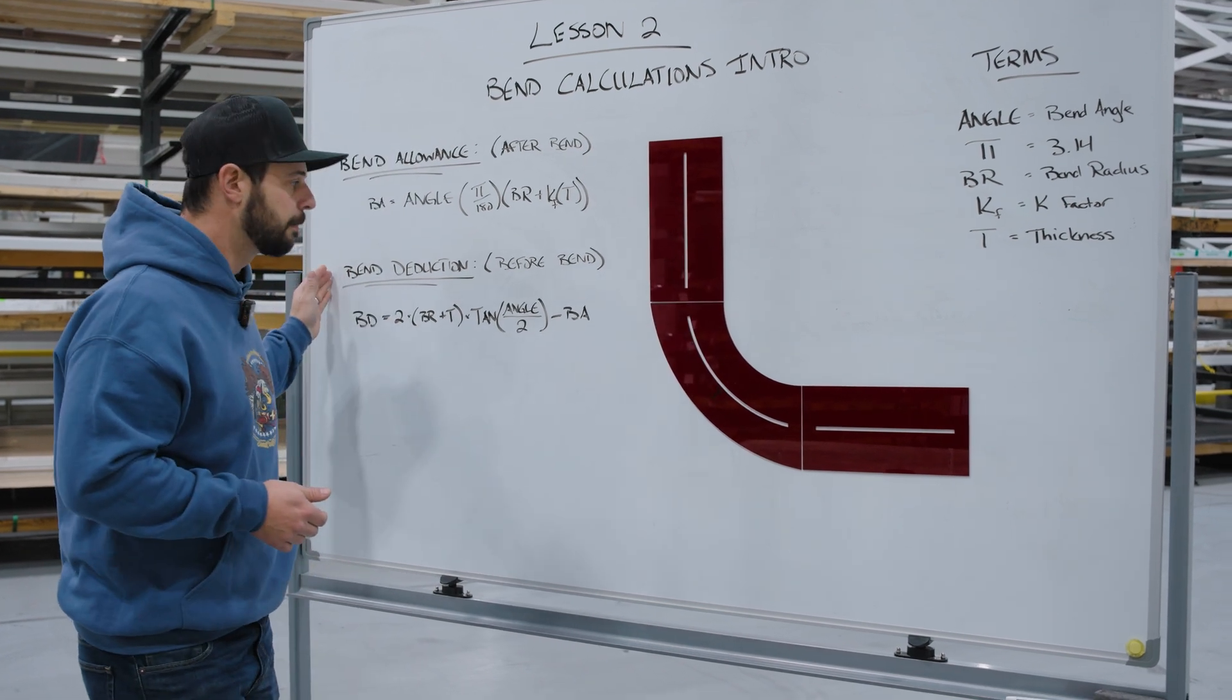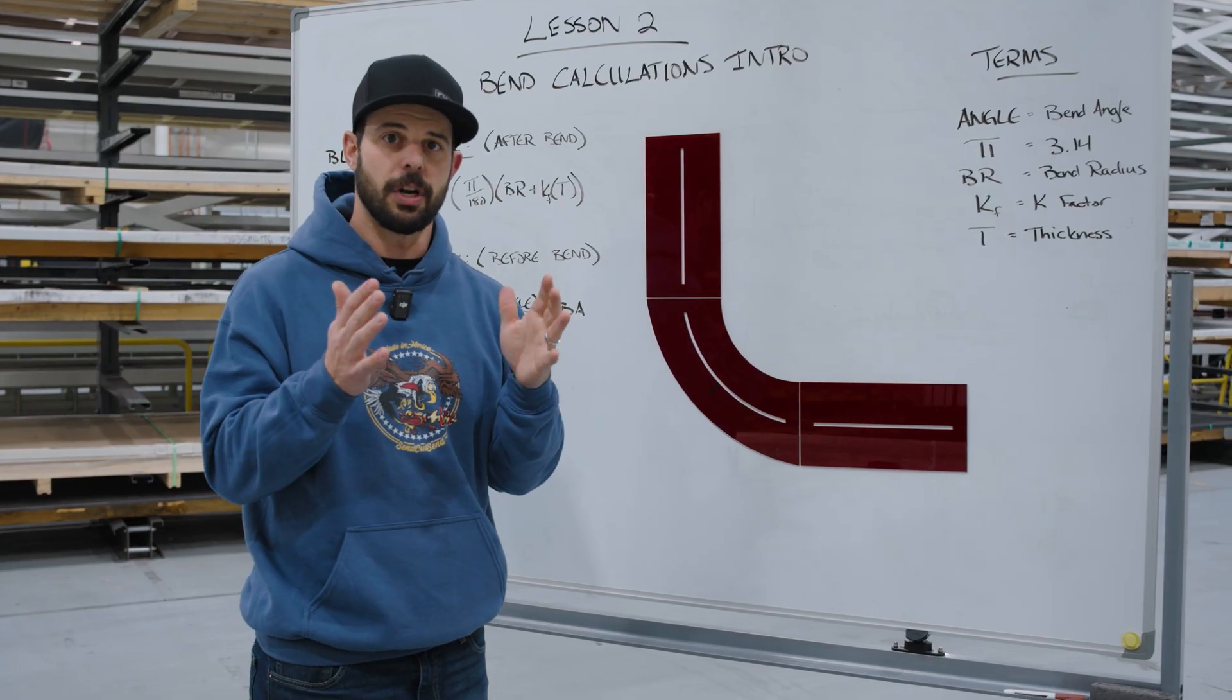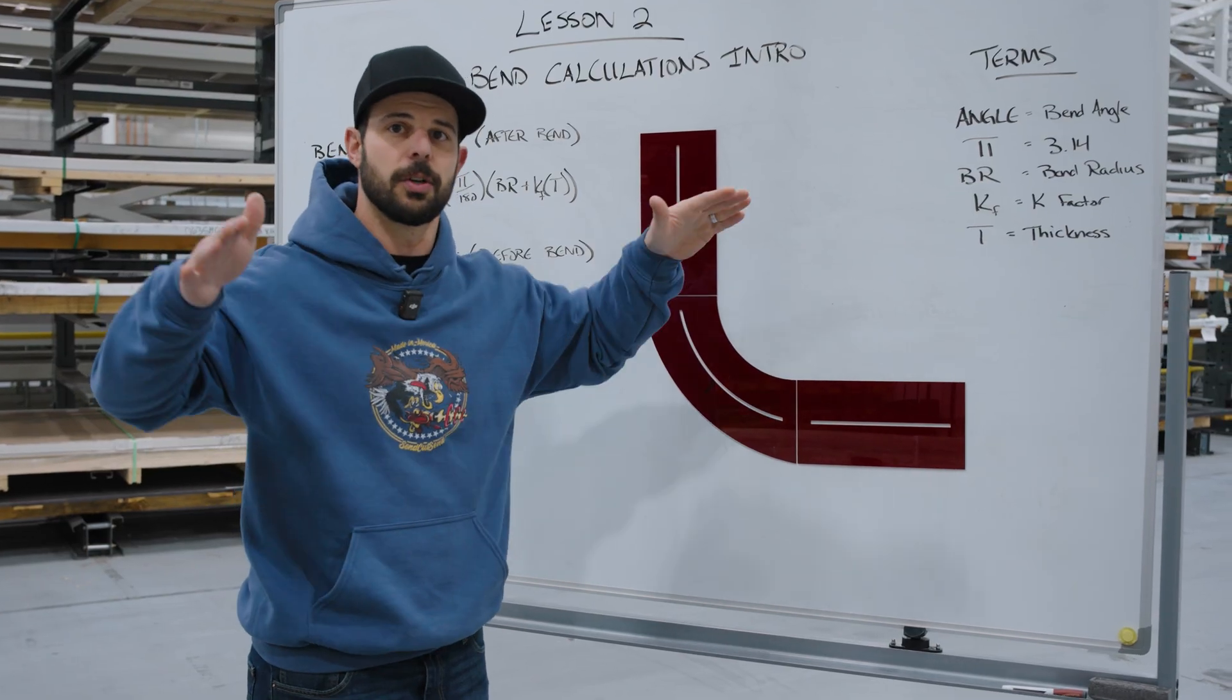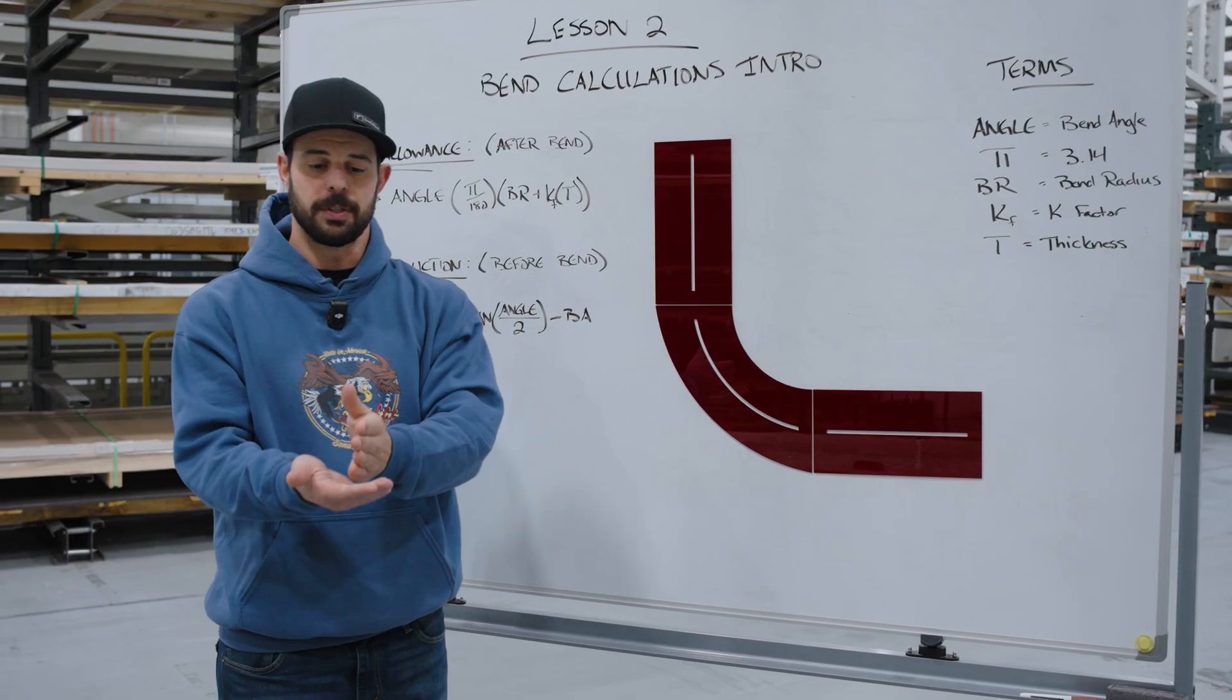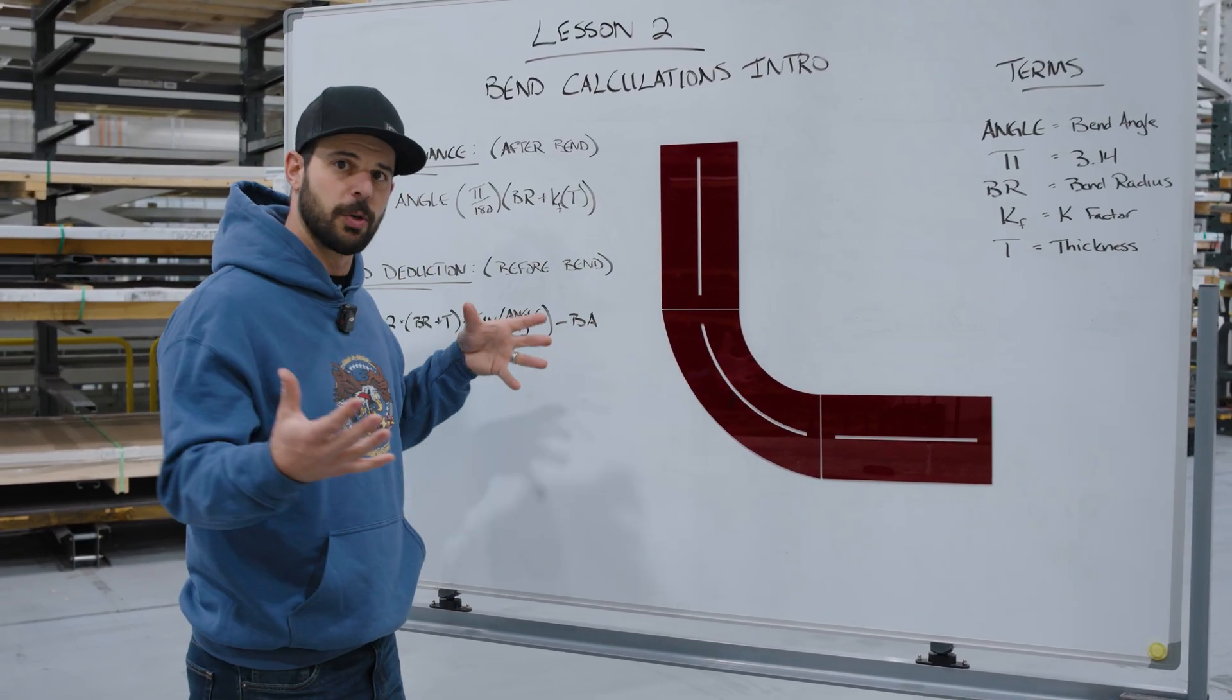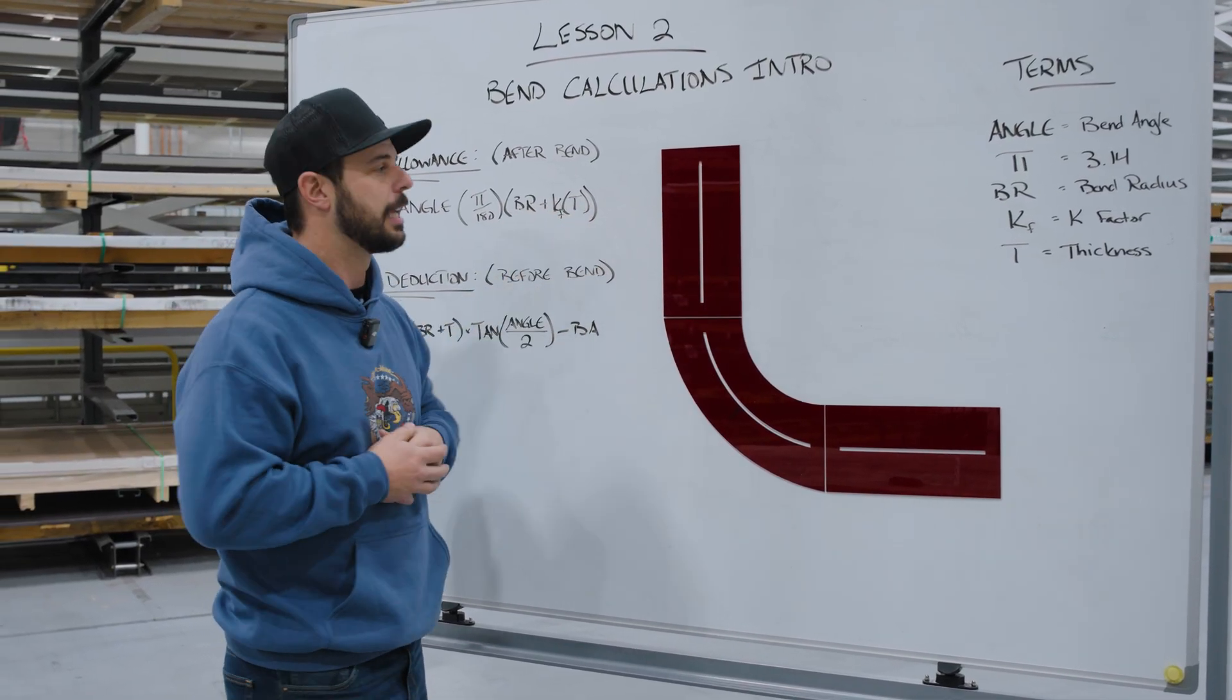With bend deduction, we're going to take that stretched version and subtract that elongation, that stretch, so that when we have our part before it gets made, it's shorter and will stretch into it. You can think of this like playing football—when throwing to a receiver, you don't throw to where they are, but where they're going to be. We want to pull back the material a little bit and allow it to stretch into those flange lengths we want in the end result.